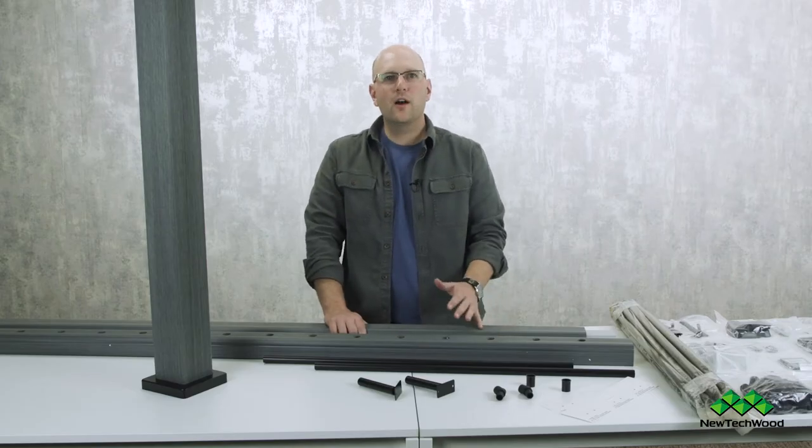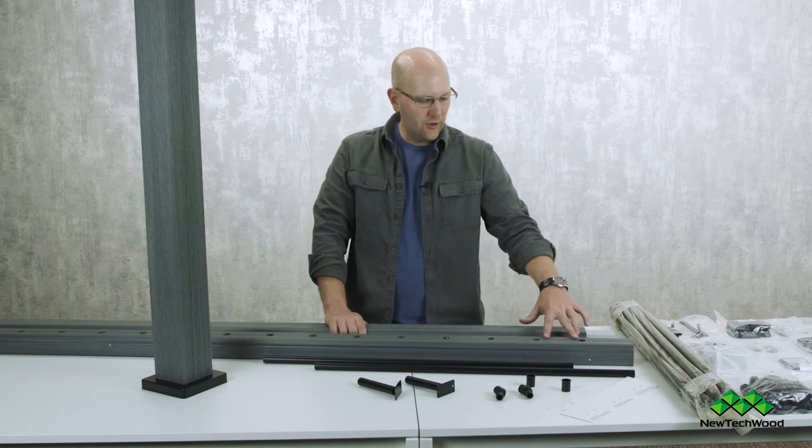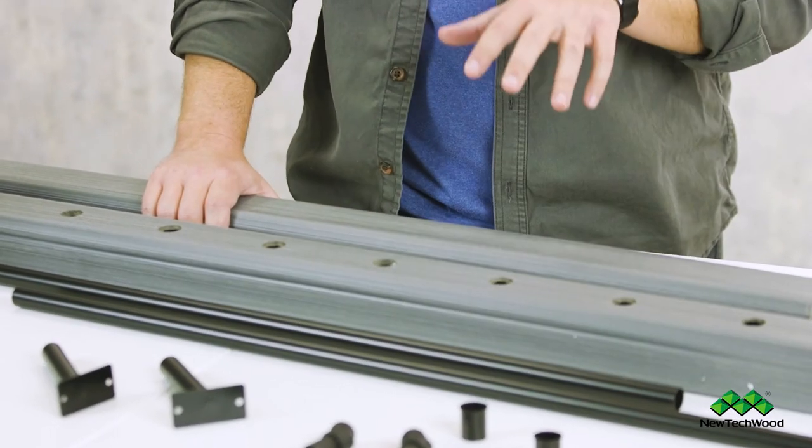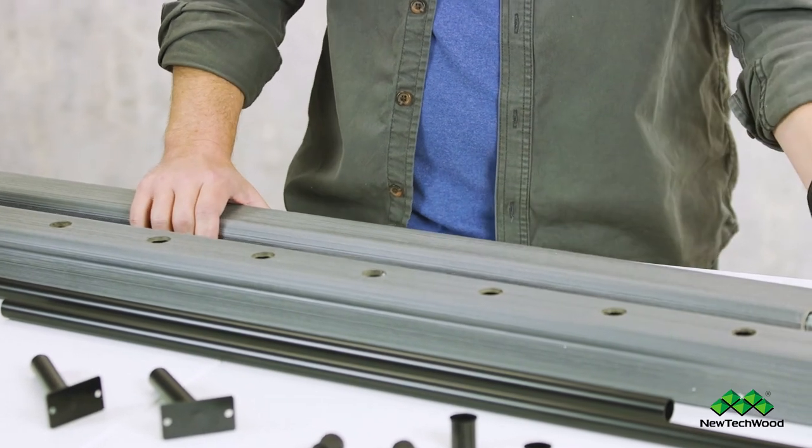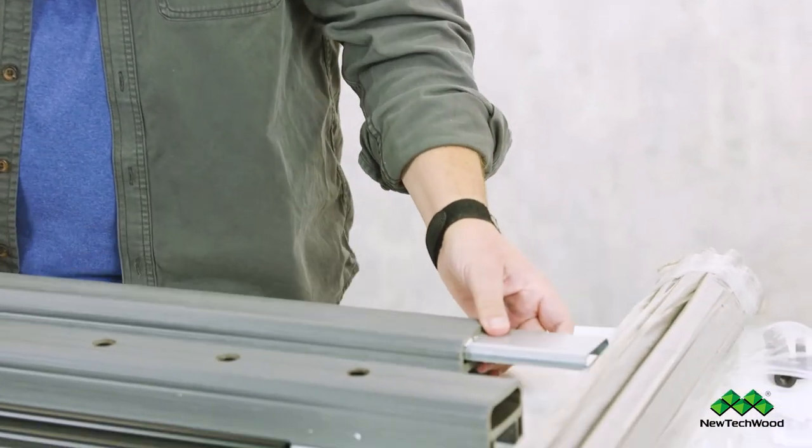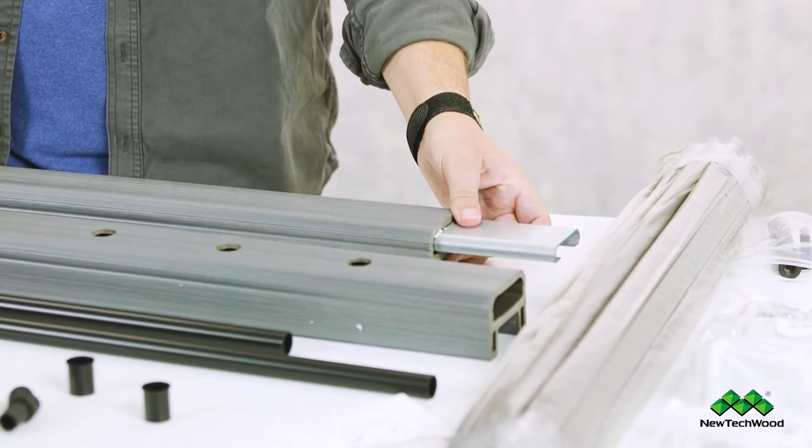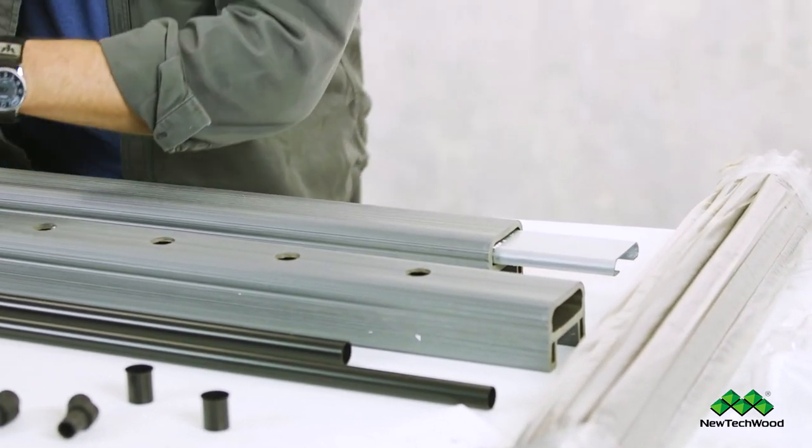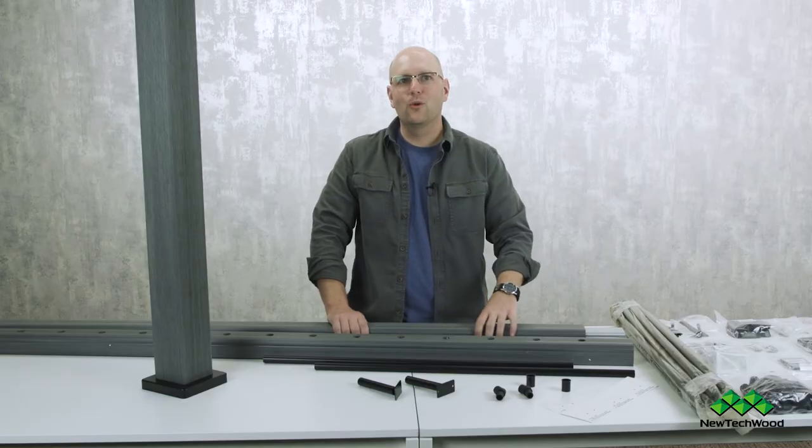Your top and your bottom rails are both pre-drilled with these nice little holes for your balusters and your top rail comes with a galvanized metal insert. So you can see that there. That's going to give you extra strength and stability because this is the rail that you're leaning up against and you want to make sure that's really strong and supportive.